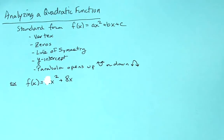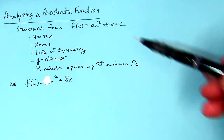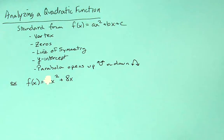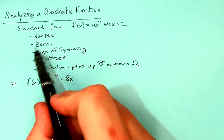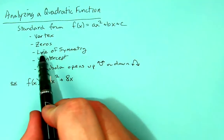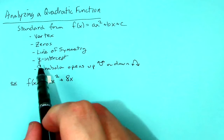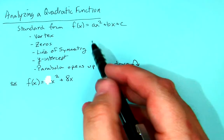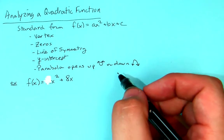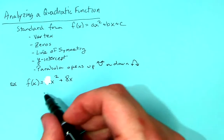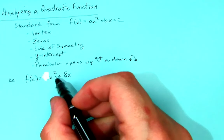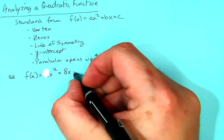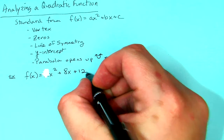Hi everybody. We are going to talk about analyzing a quadratic function, which means we are going to find a vertex, we're going to find zeros, we're going to find our line of symmetry, the y-intercept, and the parabola, whether it opens up or down. And we're going to use the function f(x) = x² + 8x + 12.